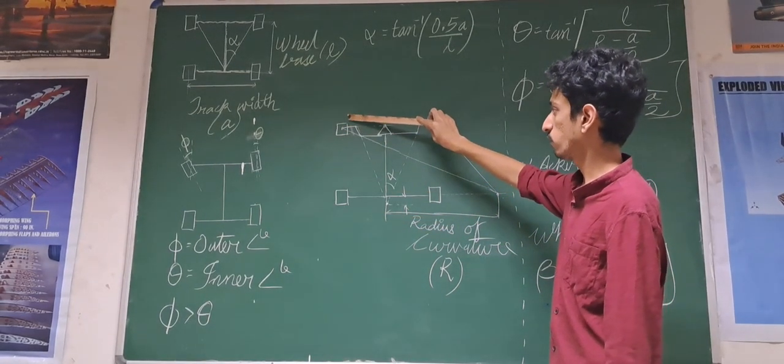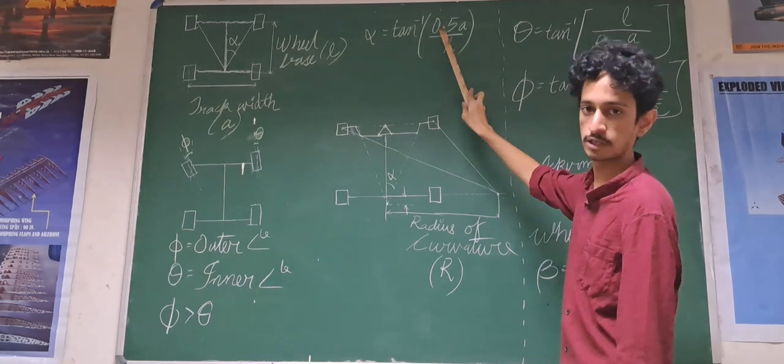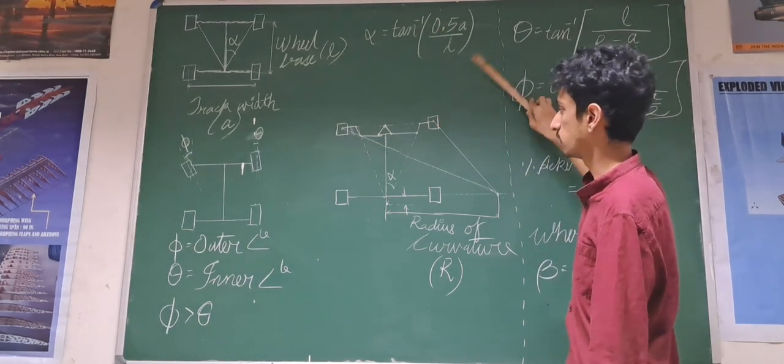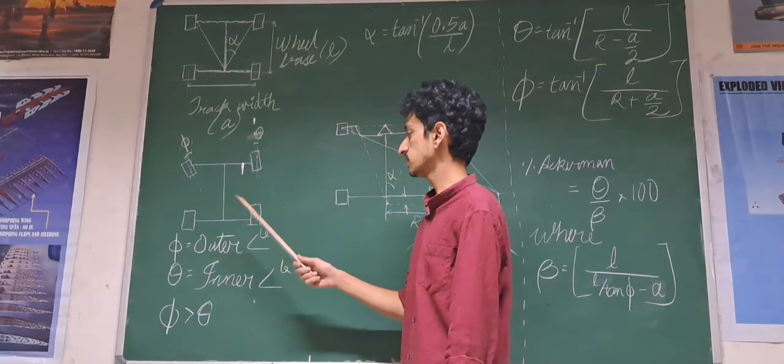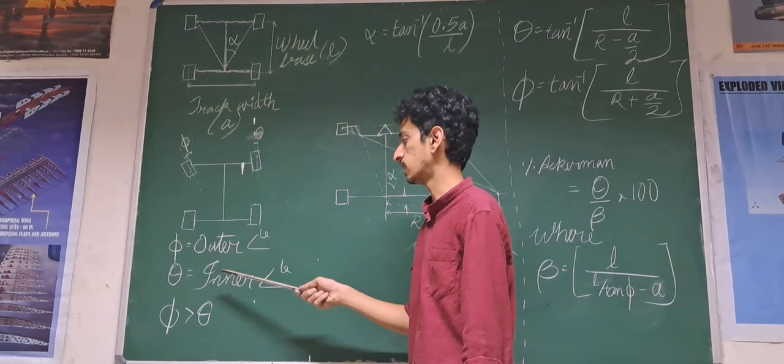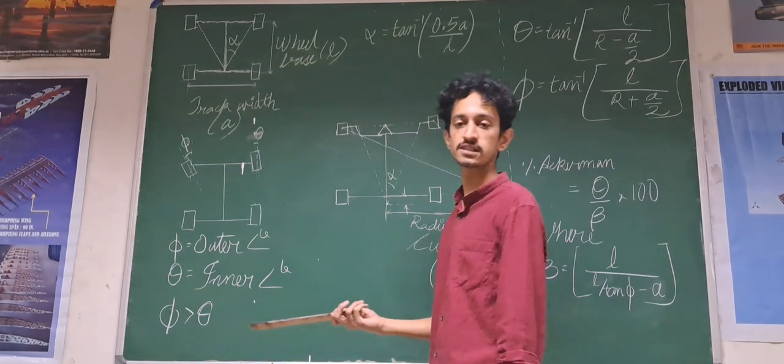this wheel has to cover far more distance in a circumference than the inner wheel. Hence, we can see that the inner wheel has a greater angle than the outer wheel. This can be shown as phi and theta and we can say that phi is always greater than theta.